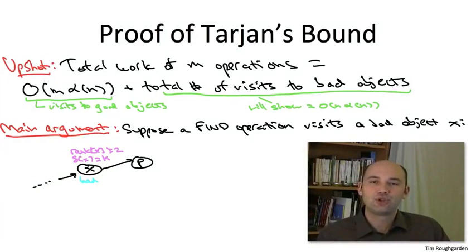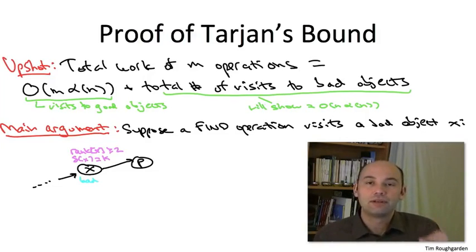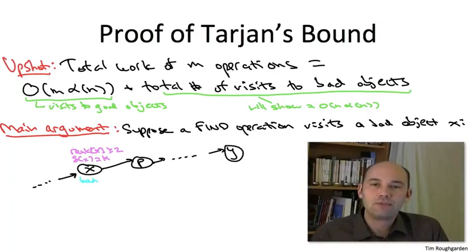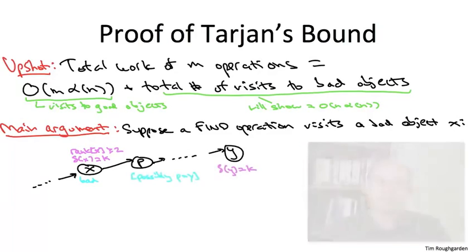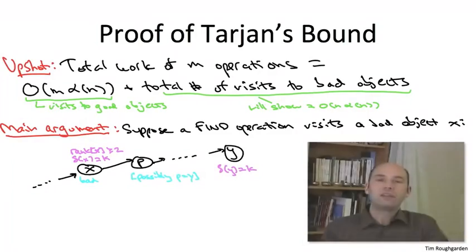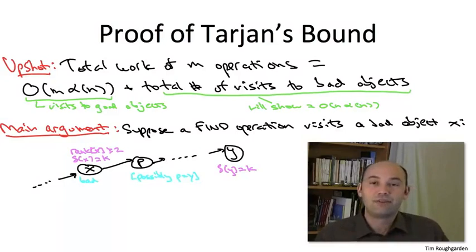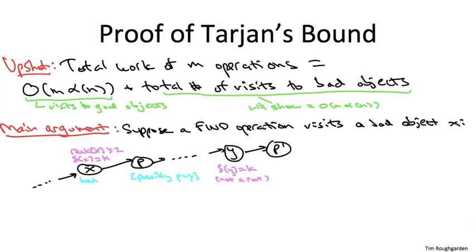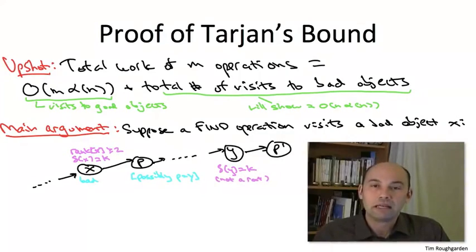X has an ancestor Y with delta(Y) equal to K. It is possible that P and Y are the same object, or they could be different — it's not going to matter in the analysis. Recalling that the statistic delta is only defined for non-roots, we can conclude that Y is also not the root. It must then have some parent — call it P'. P' might be a root or it might not; we don't care.